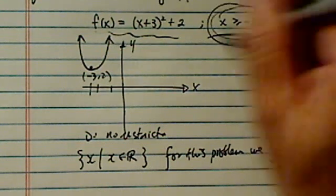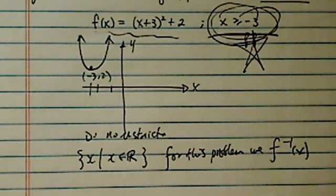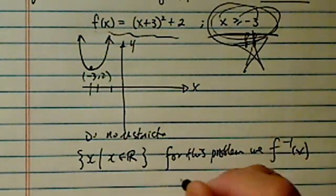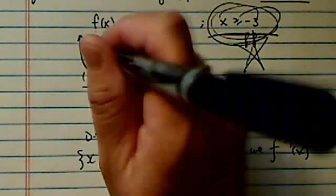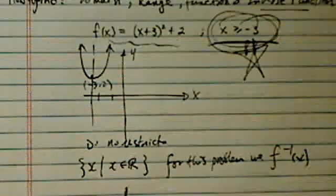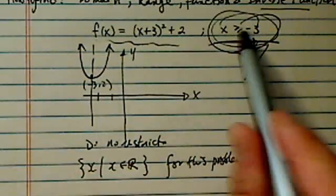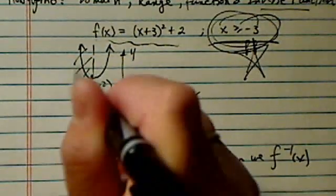We'll explain why this restriction is so important. Now, since we're given that, for this particular problem we're only given half of this curve. x is bigger than minus three, so this half is actually gone.